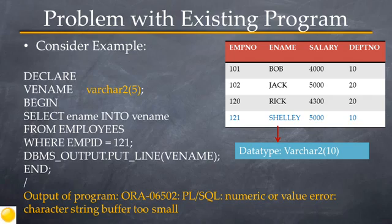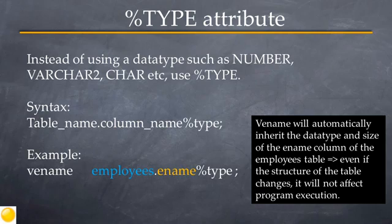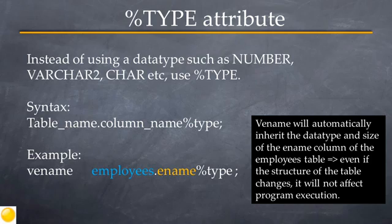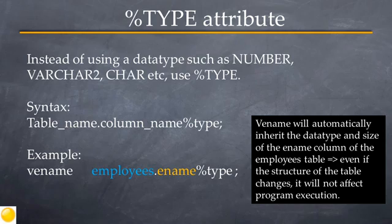To prevent such a failure, you can use the %TYPE attribute. The %TYPE attribute is used in place of the data type during variable declaration. It is particularly useful when there is a dependency between a column of a table and a memory variable. The syntax is: table_name.column_name%TYPE. Based on the program discussed, you can declare the data type of vename as employees.ename%TYPE.